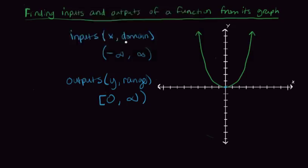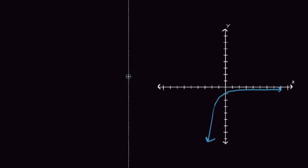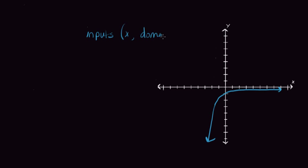Let's look at another graph. For this different function, when I make my horizontal scan to look for all possible inputs — again, the x variable or the domain — I have function values all the way positive and all the way negative. It's going on forever, so it will eventually reach even the far edges. So again, all possible inputs range from negative infinity to positive infinity.